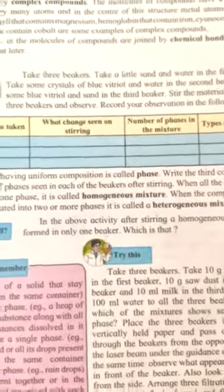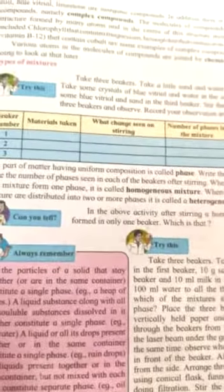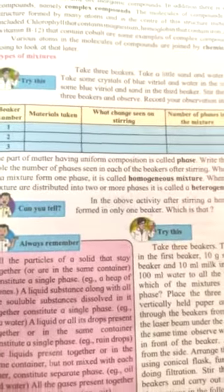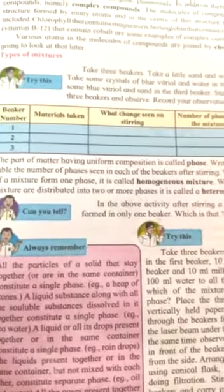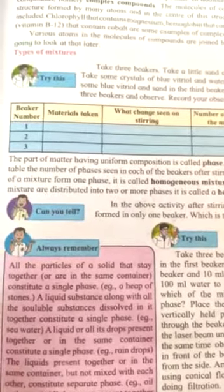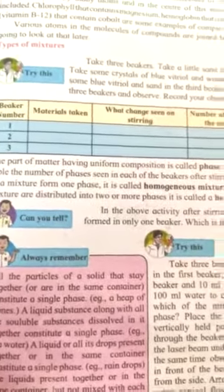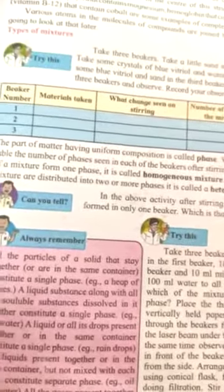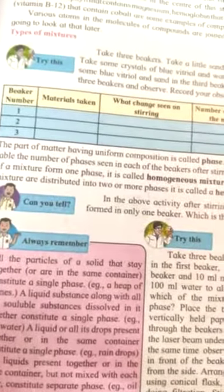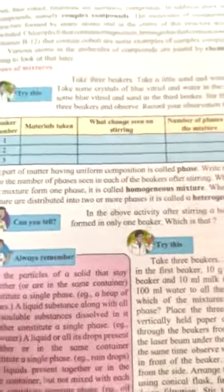Next, types of mixtures — there are two types: homogeneous and heterogeneous. First, we study about phase. The part of matter having uniform composition and uniform structure everywhere is called a phase. When all the components belong to the same phase, they are called a homogeneous mixture. If they are from different phases, they are called a heterogeneous mixture.